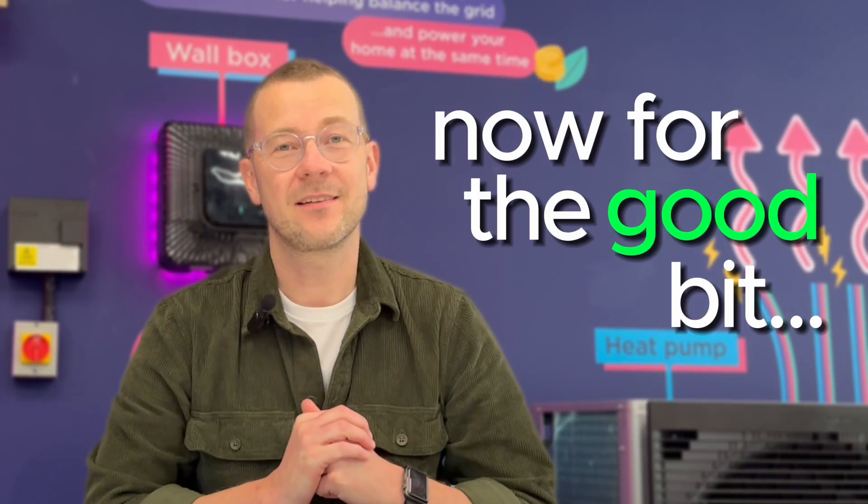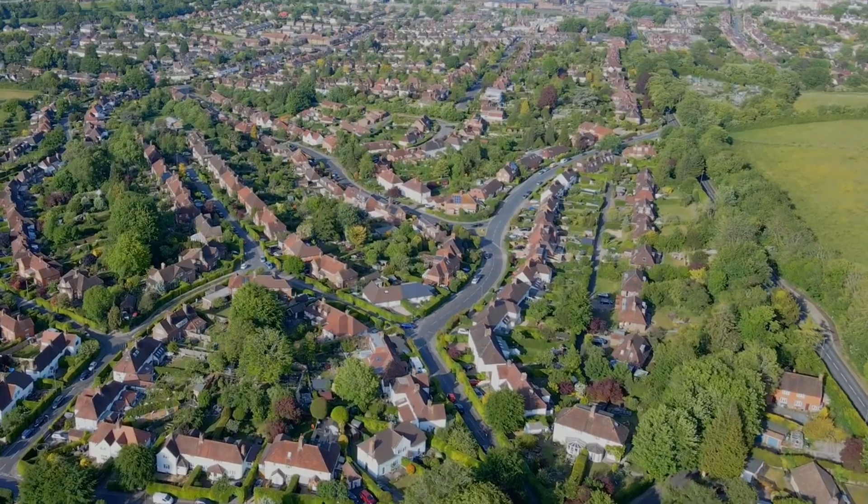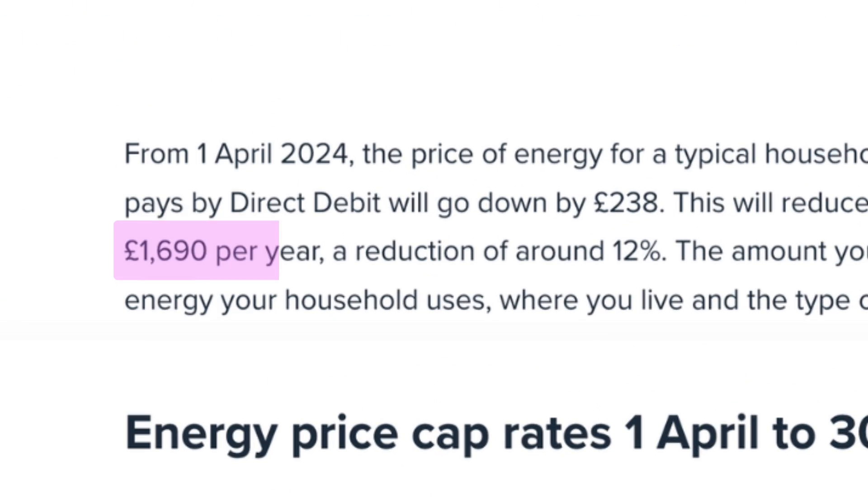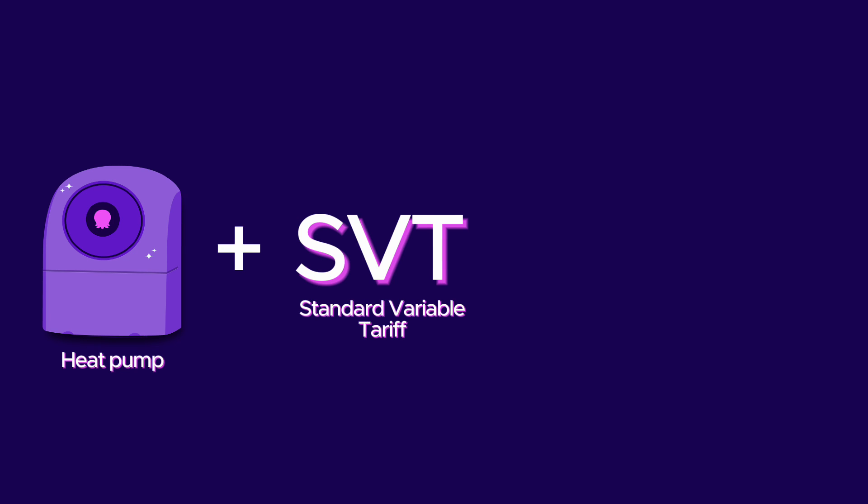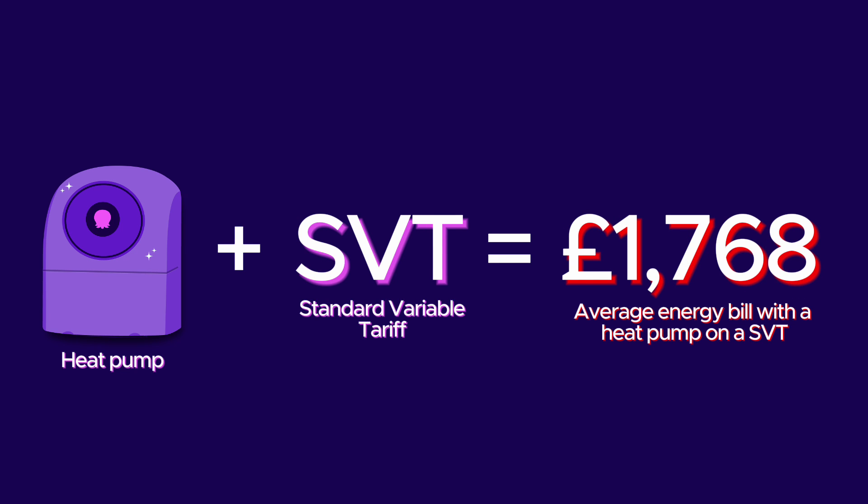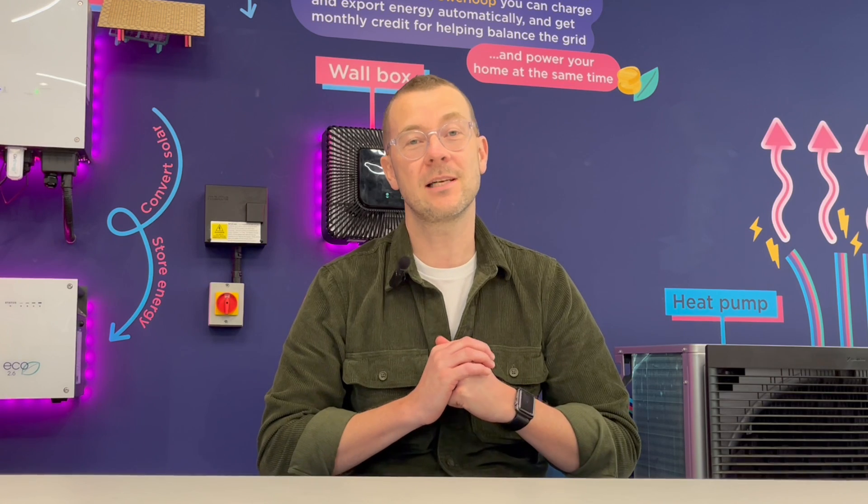Now for the good bit. Let's take a look at the numbers using Ofgem's figures for a medium-sized UK home and the April 2024 price cap as well as the current rates for our Cozy Octopus smart tariff. The average UK energy bill for a customer on a standard tariff like our flexible Octopus tariff is £1,690. Running a heat pump on this standard tariff would cost an extra £78, bringing the total to £1,768. This is because electricity is more expensive than gas. Now I know that's not a big difference, but it's still more expensive.